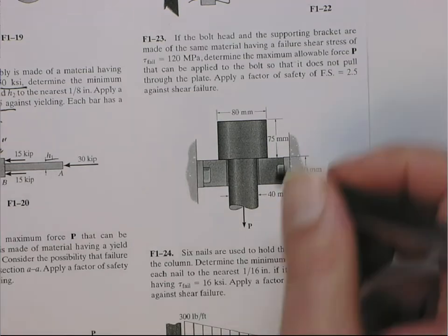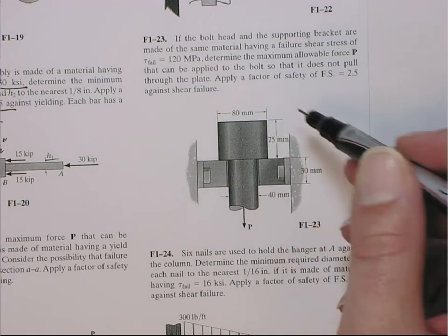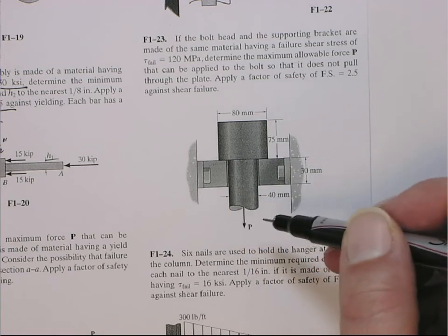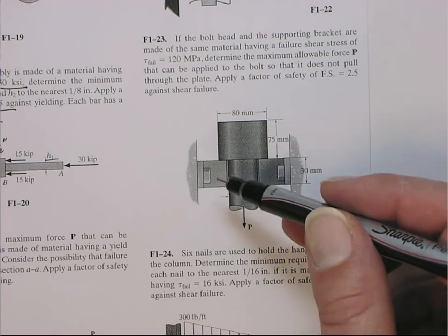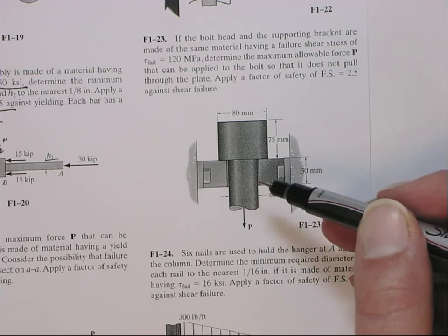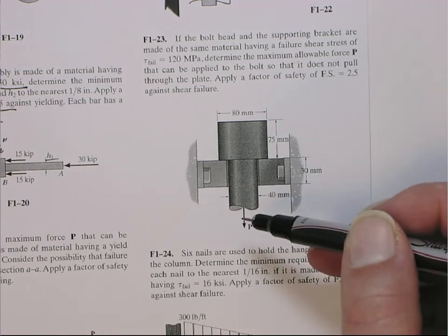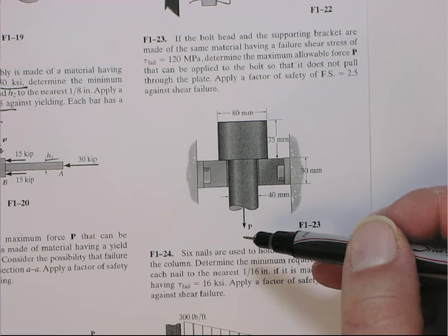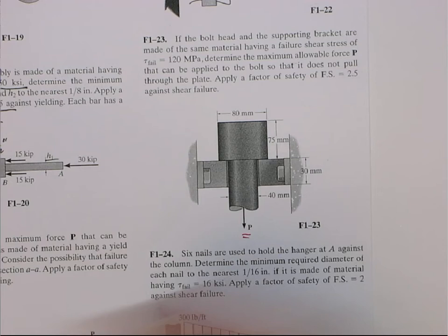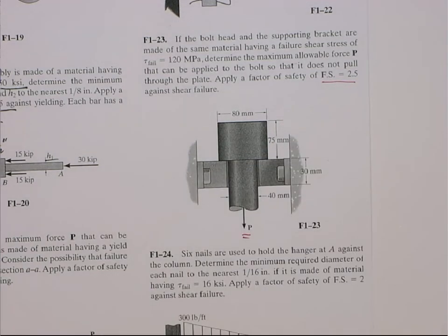So here we have a bolt head, we're going to idealize this, assume it's cylindrical, and then here is the bolt shank. It gets pulled through this plate that resists it, so there's a hole here. We're going to assume that the hole diameter is nominally the same size as the shaft, although there probably is a little clearance, and then there's a downward force of P. In this problem, you have to determine P such that we have a pull-out factor of safety of 2.5.